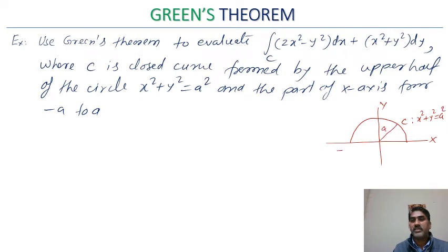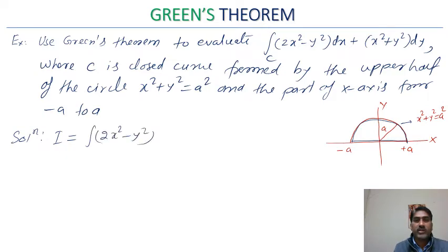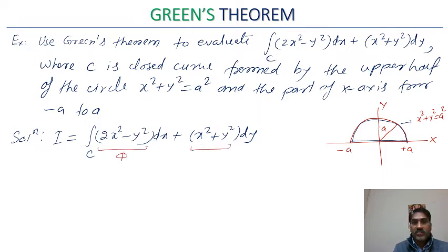The curve C consists of the upper semicircle and the segment of the x-axis, forming a closed path. The region R bounded by C is the upper half-disk. Using Green's theorem, we identify Φ = 2x² − y² and Ψ = x² + y². Then ∂Ψ/∂x = 2x and ∂Φ/∂y = −2y, so the integrand becomes 2x − (−2y) = 2x + 2y, and the integral equals ∬_R (2x + 2y) dx dy.